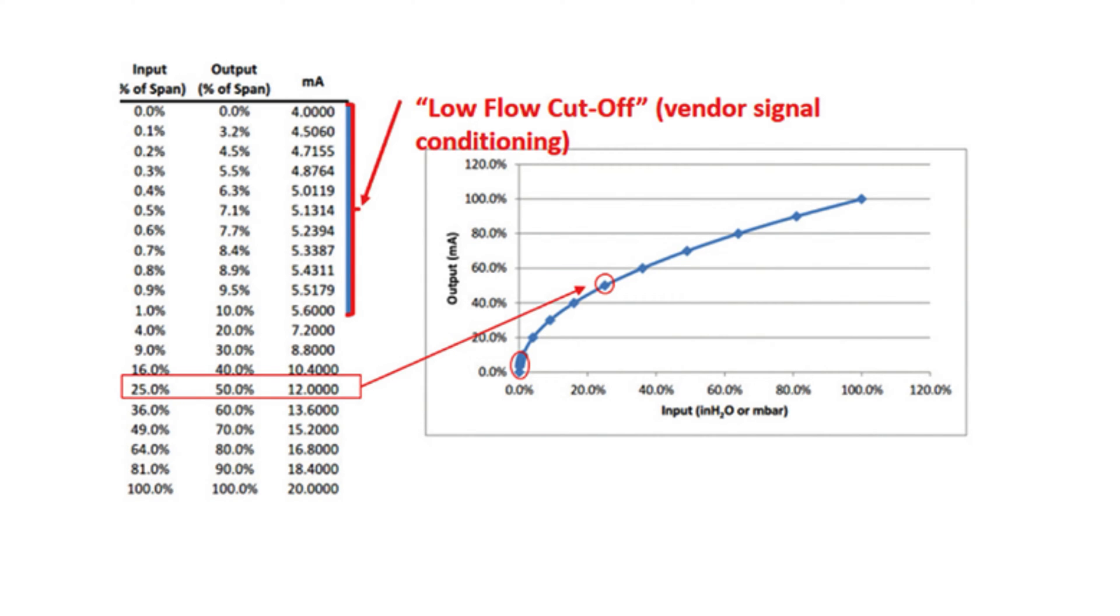A low flow cutoff at a flow rate of 10% corresponds to an output of 5.6 mA. So between 4 and 5.6 mA there is no useful measurement possible because of too much inaccuracy. All of that will have consequences on the calibration of our DP flow transmitter.